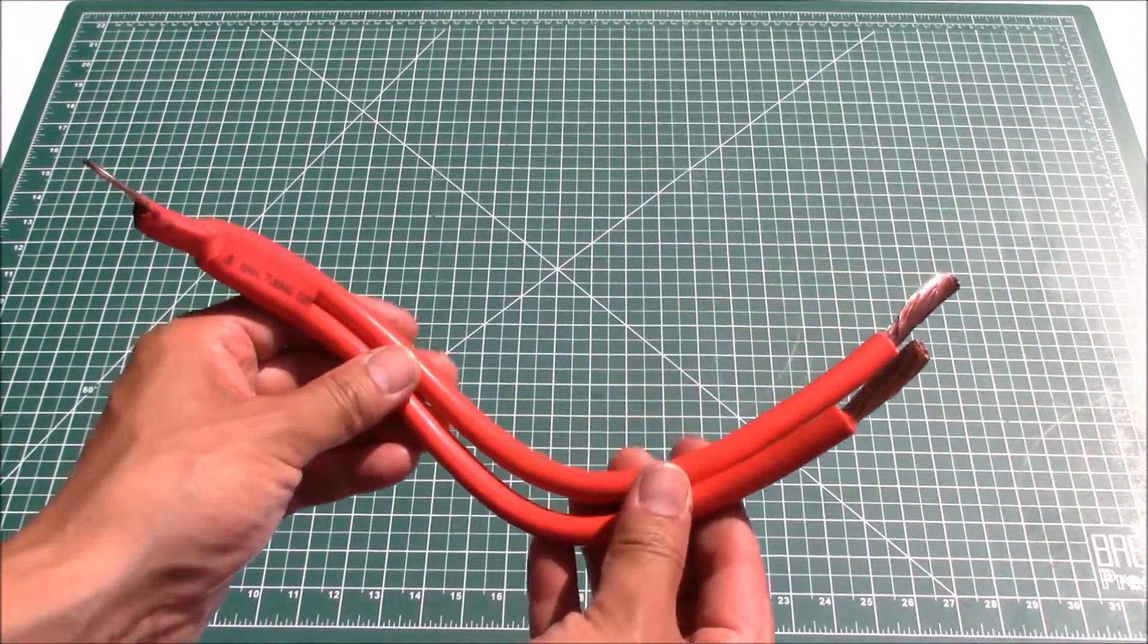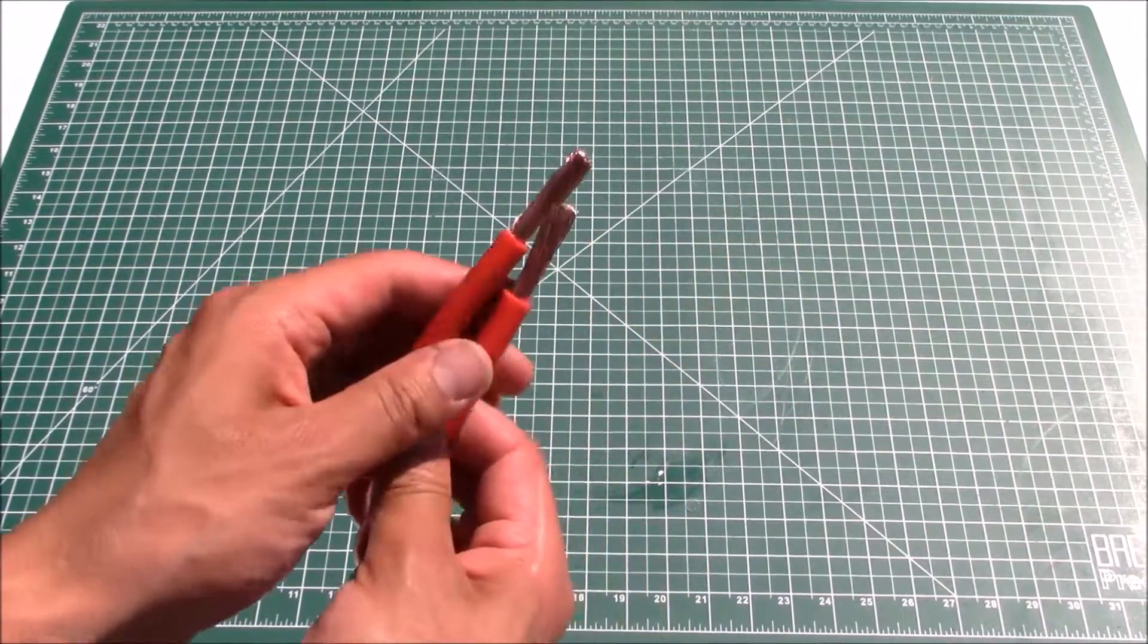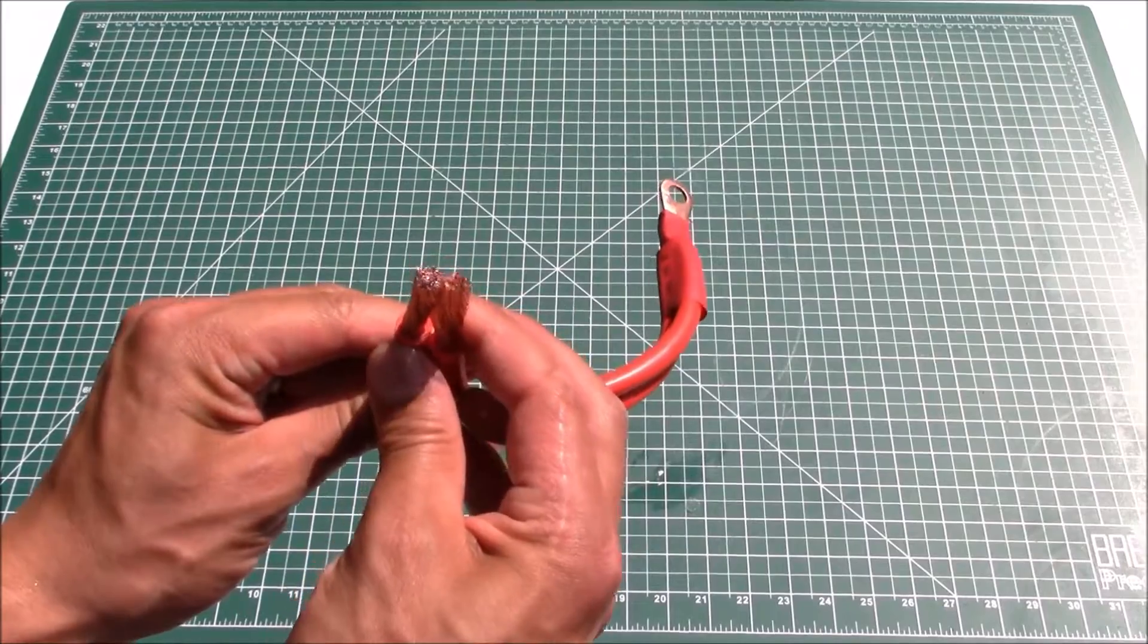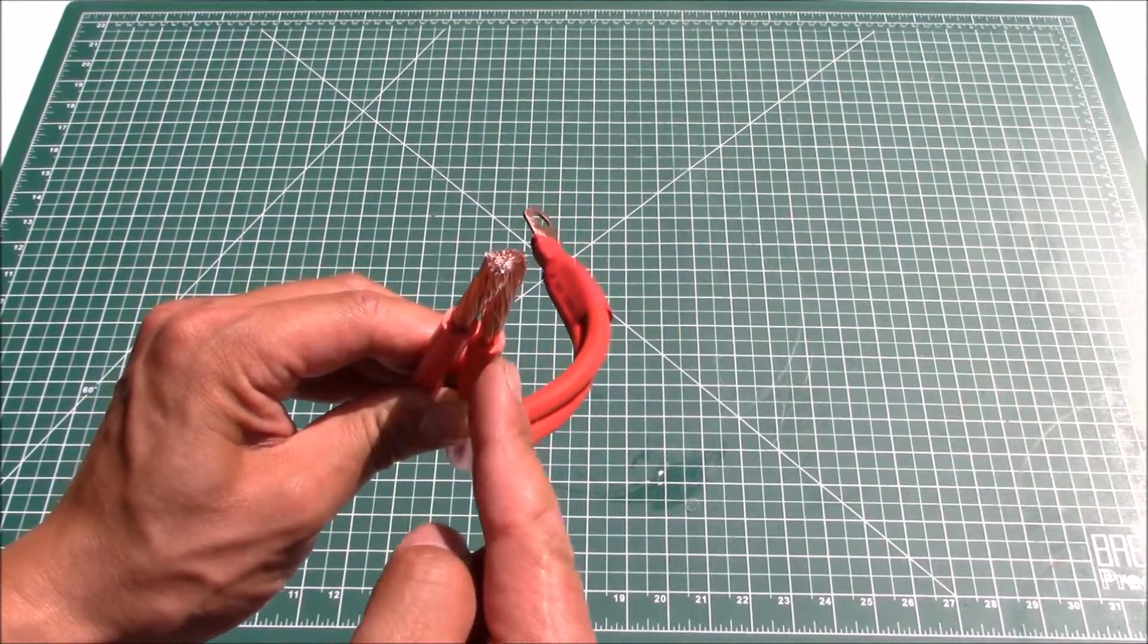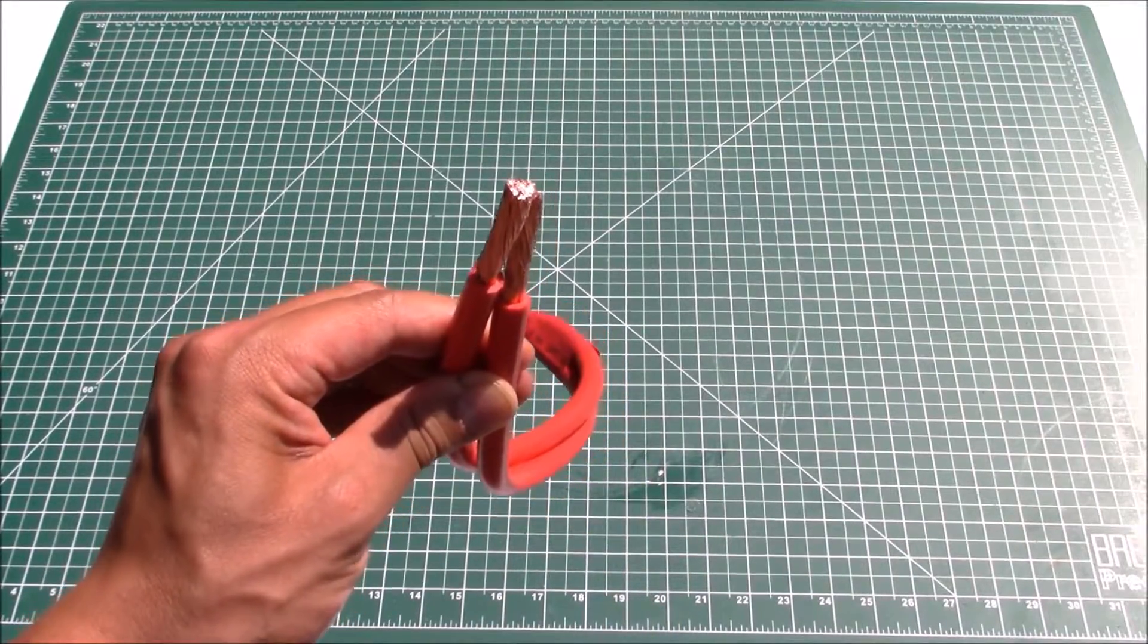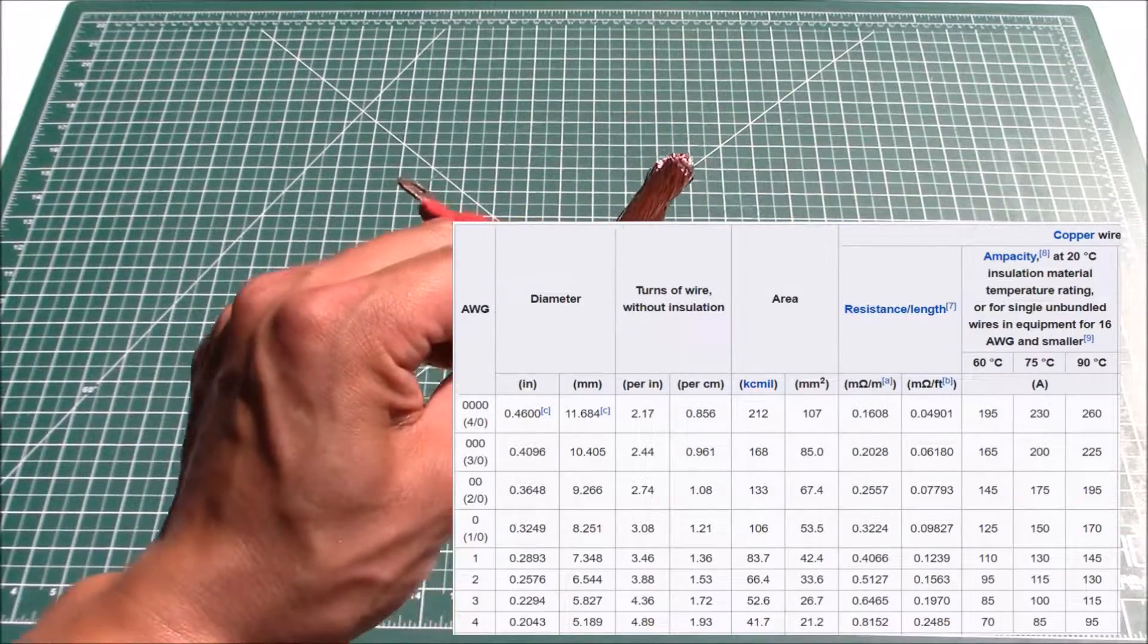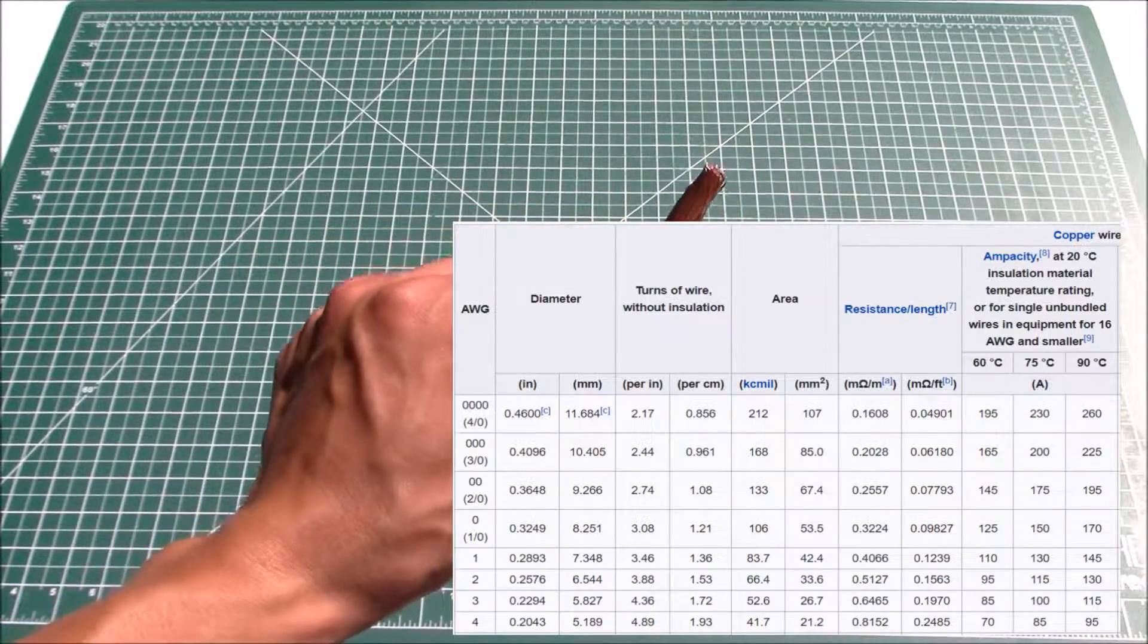The first thing we need to do is identify the nominal cross-sectional area of the cable. Since I've got two of these, you can see the amount of cross-sectional area of these two four gauge wires put together. I did the calculation - it's about 0.0656 inches squared, which is about the same cross-sectional area as a one gauge wire.